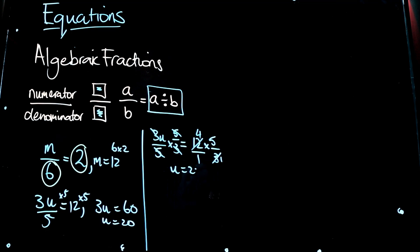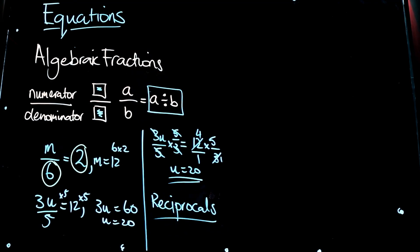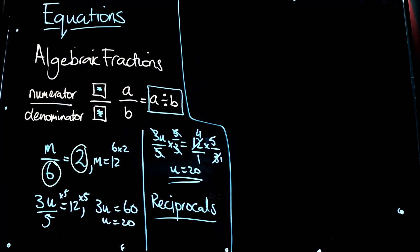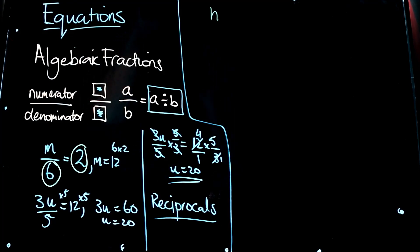If you understand reciprocals, use them. It's two steps rolled into one — you can unwind two steps in the puzzle with one move. I call it a ninja move. So let's look at a few more examples that are a little bit more complicated.